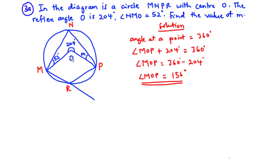Moving forward, let's draw a chord from point M on the circumference of the circle to point P on the circumference. From the properties of circle theorems, the angle subtended by a chord at the center of the circle is twice the angle subtended at the circumference. The angle subtended by chord MP at the center is angle MOP, which is 156 degrees.